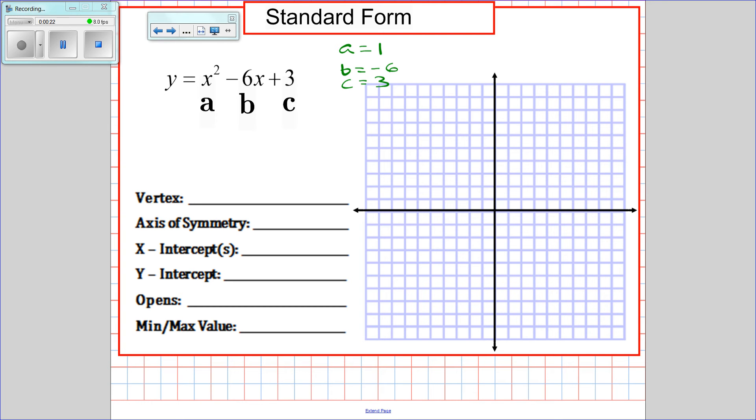I always start these problems by remembering that c is my y-intercept. So for this one I will plot (0, 3), and then I'll remember that my axis of symmetry is opposite of b over 2a, which in this problem is positive 6 over 2, or 3. So I will plot the line x equals 3.